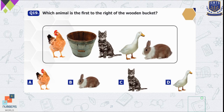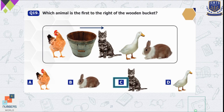Question number 19 — which animal is the first to the right of the wooden bucket? There is a wooden bucket next to the hen, and at the right side of this wooden bucket the first animal shown is a cat. So option C is the correct option.